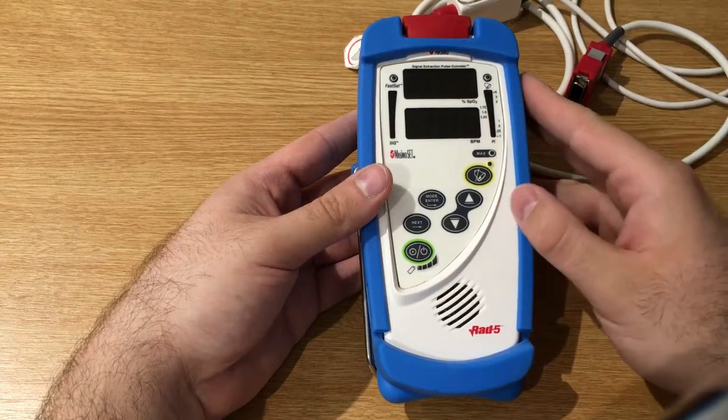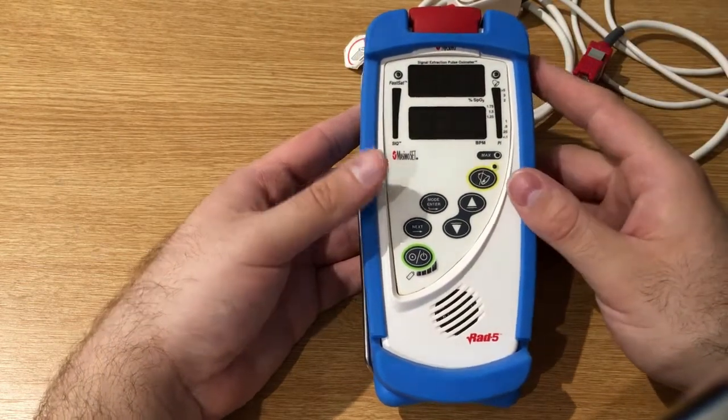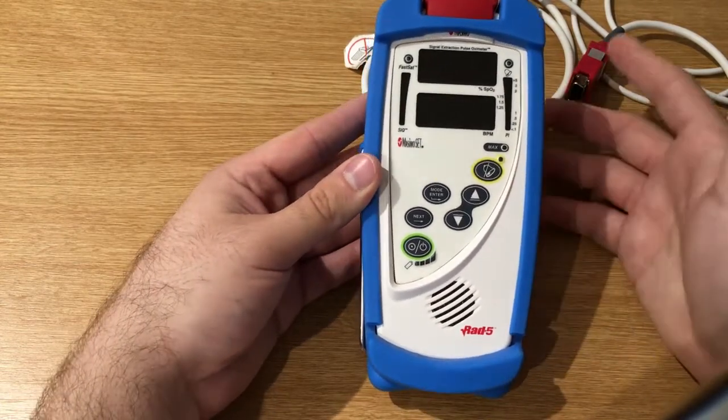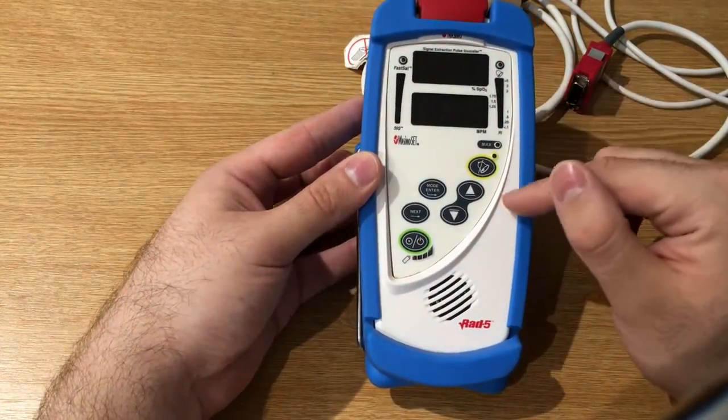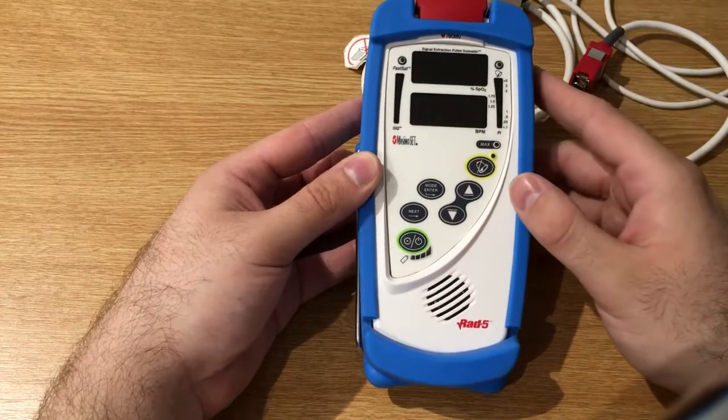Obviously this doesn't have some features that the Radical 7 has, like the Rainbow technology, like the Bluetooth and Wi-Fi connectivity so it cannot connect to a root monitor. It doesn't have the PVI measurements. This one has just the pulse index measurement.